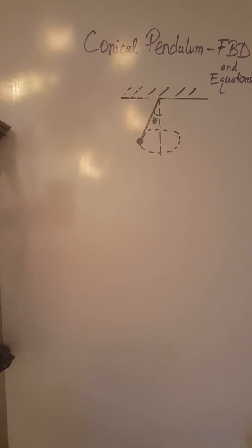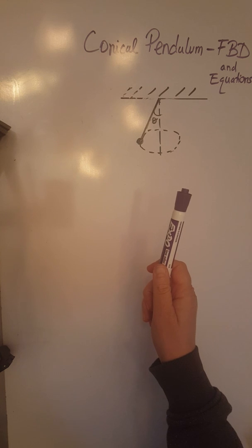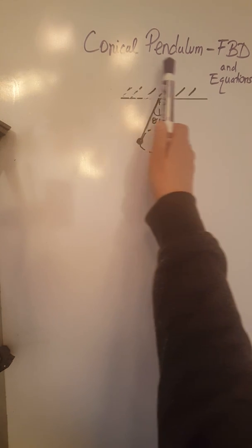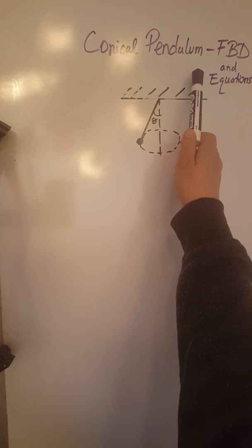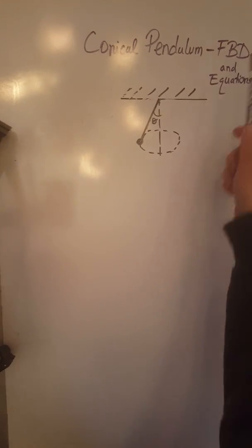Okay, so now we are going to look at another uniform circular motion dynamics problem. We are going to look at a conical pendulum. This video will show you how to put together the free body diagram for a conical pendulum and the equations.